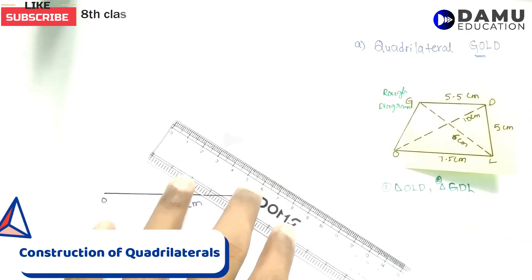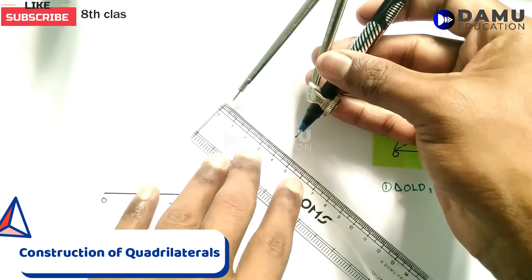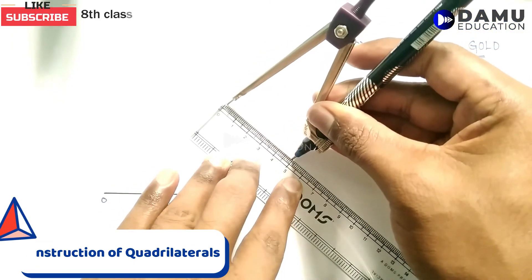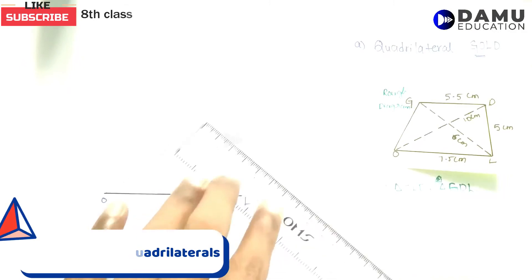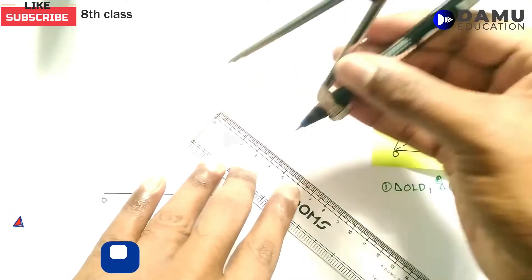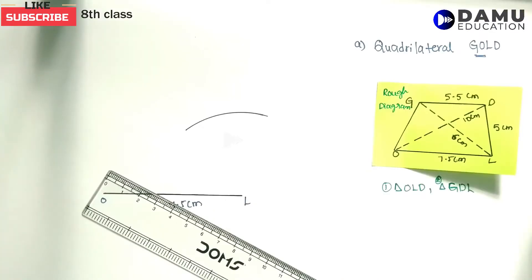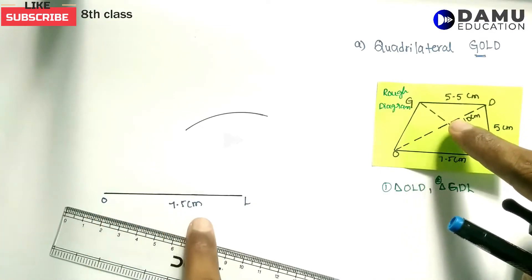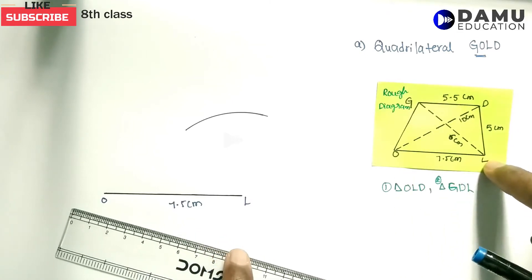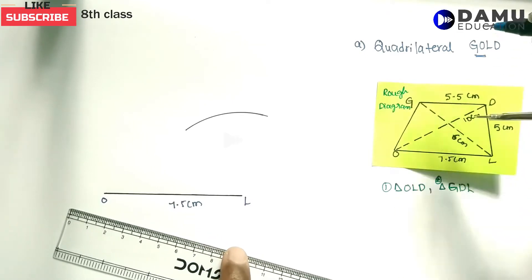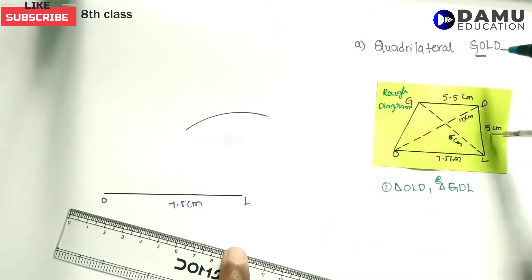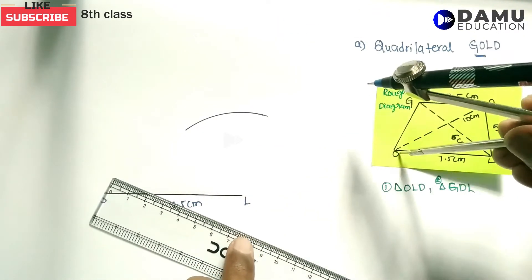Next, we take LD = 5 cm from the ruler. Using the compass, draw an arc from L as center with radius 5 cm. So OL is 7.5 cm and LD is 5 cm — draw the arc from L as center with 5 cm.